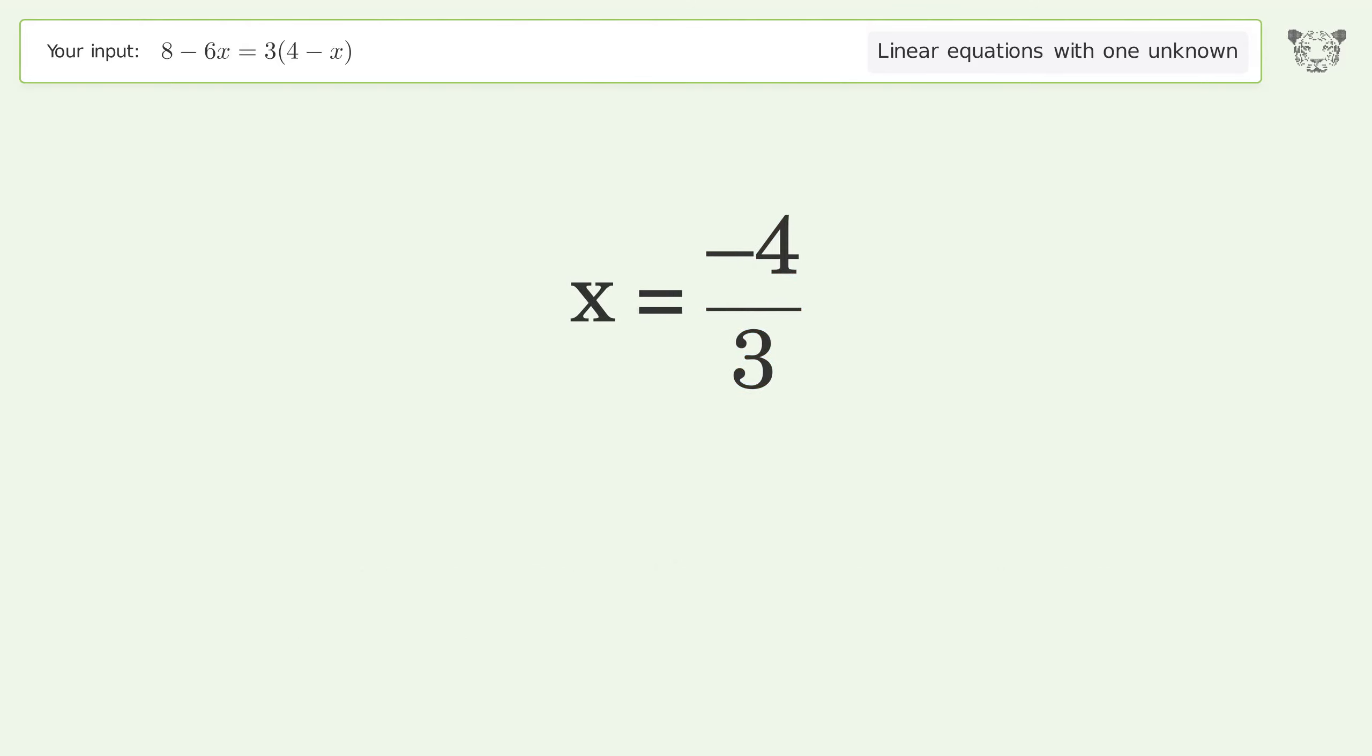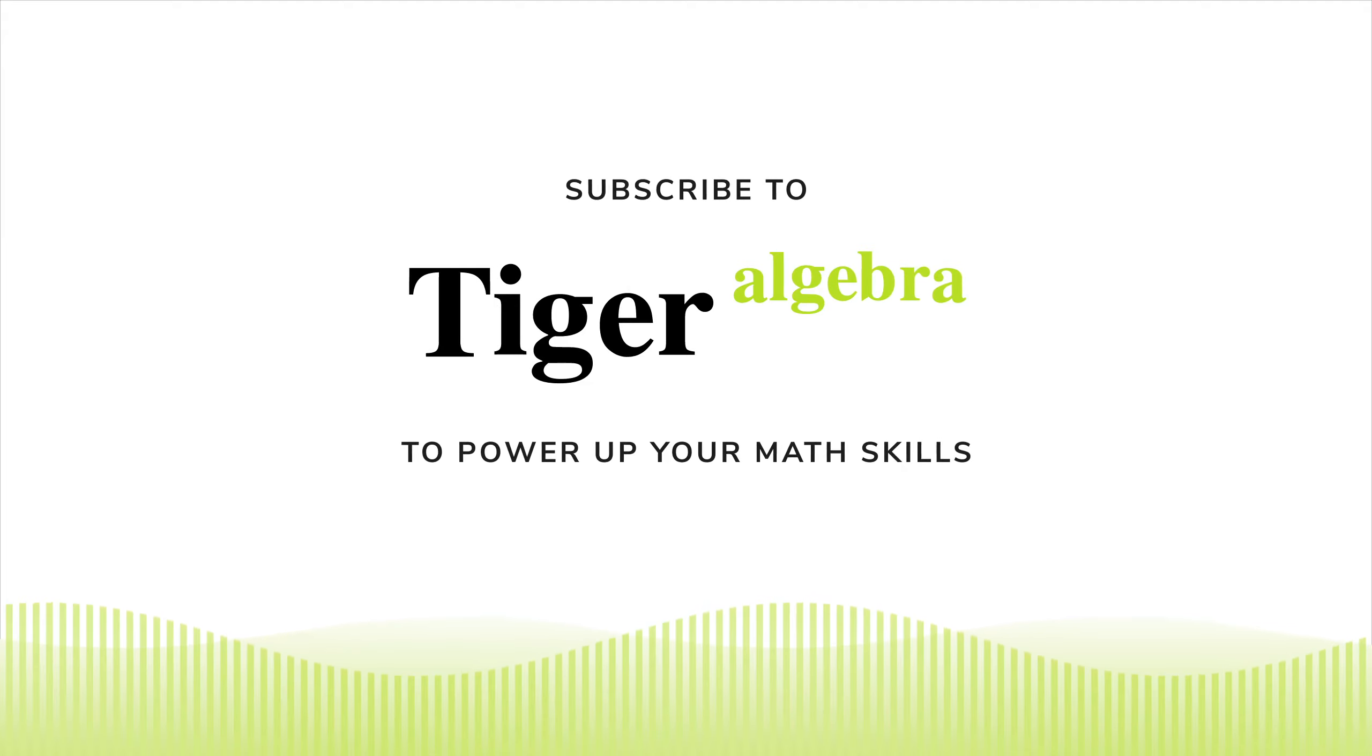And so the final result is x equals negative 4 over 3.